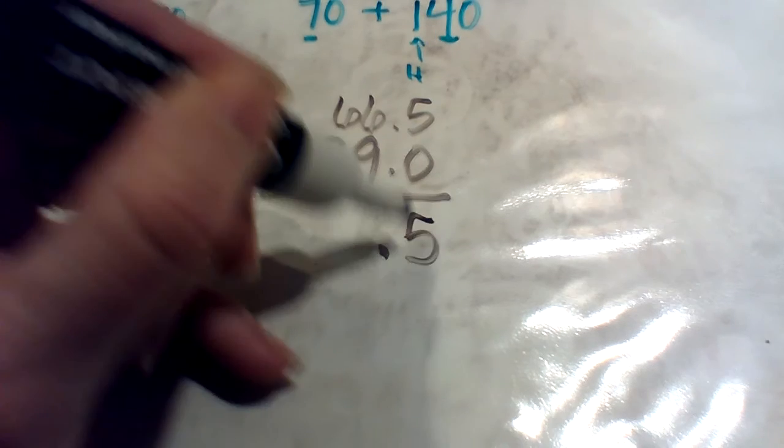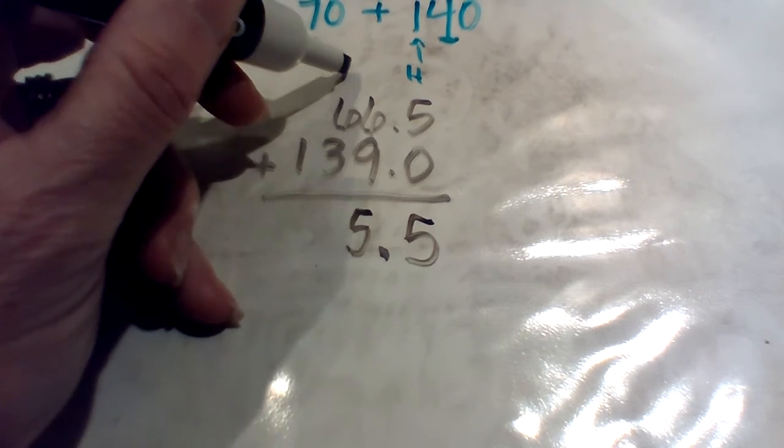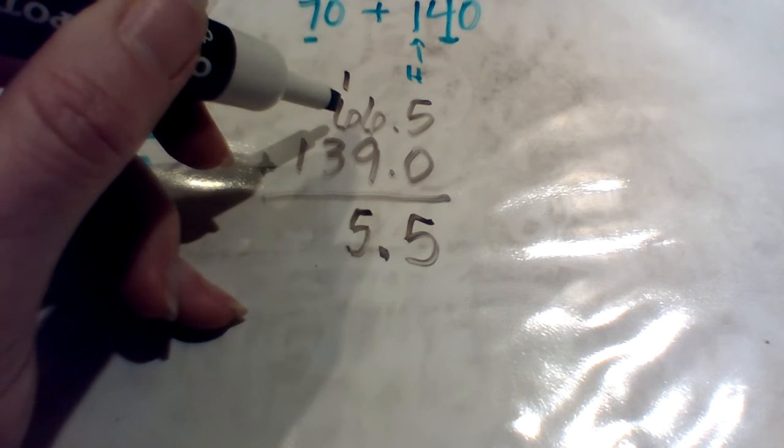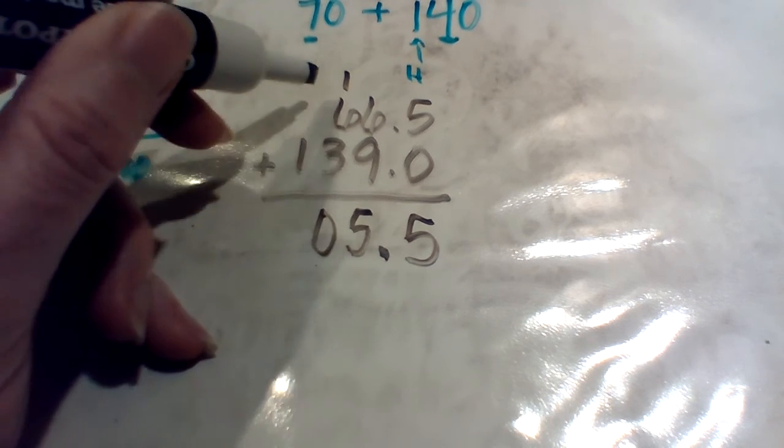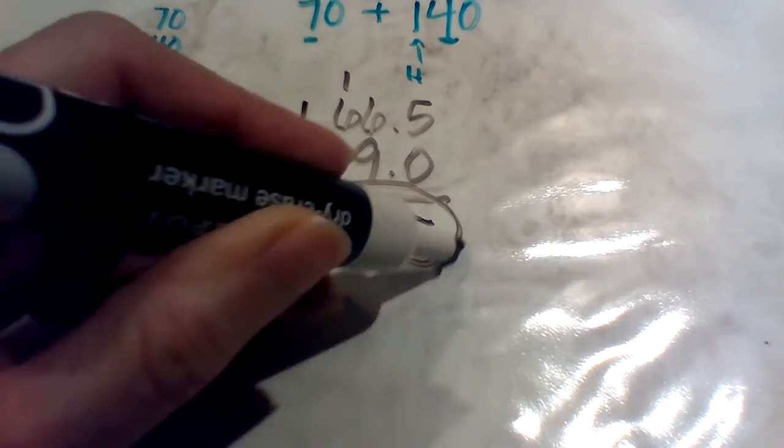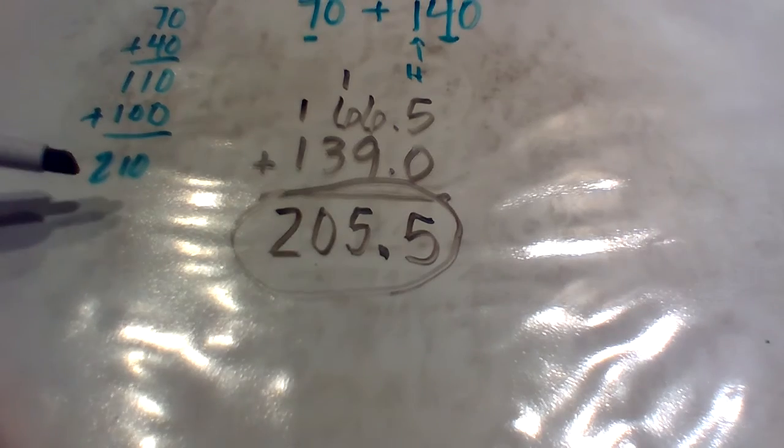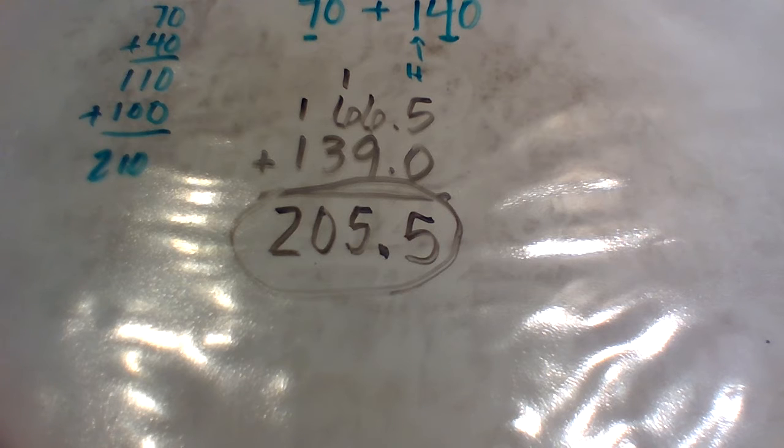5 plus 0 is 5. 6 plus 9 is 15. So I put my 5, I carry my 1. 1 plus 6 is 7. 7 plus 3 is 10. Put my 0, carry my 1. 1 plus 1 is 2. So my final answer here is 205 and 5 tenths, which is pretty close to my estimate. So that makes sense. And remember the estimate is just to give us an idea if our answer makes sense.